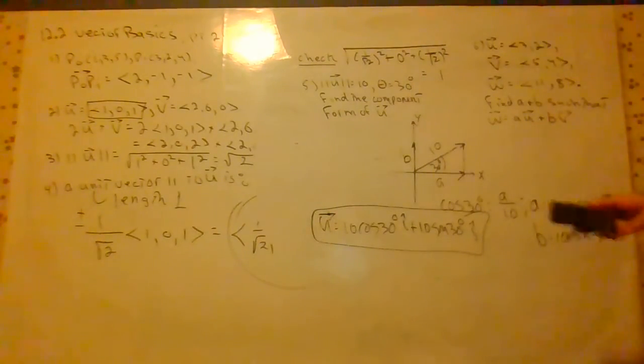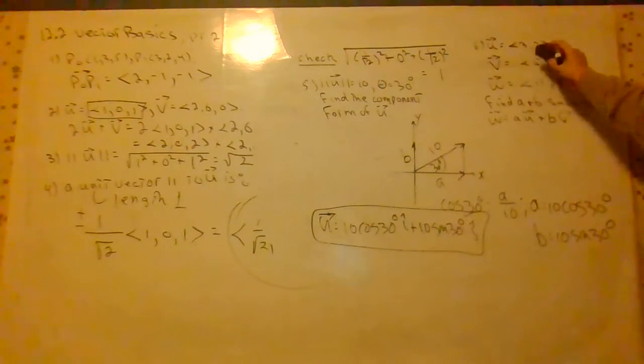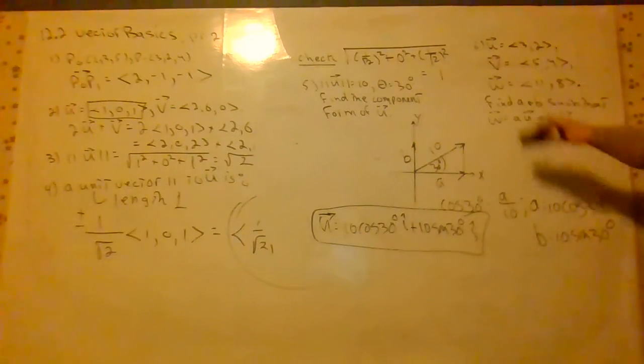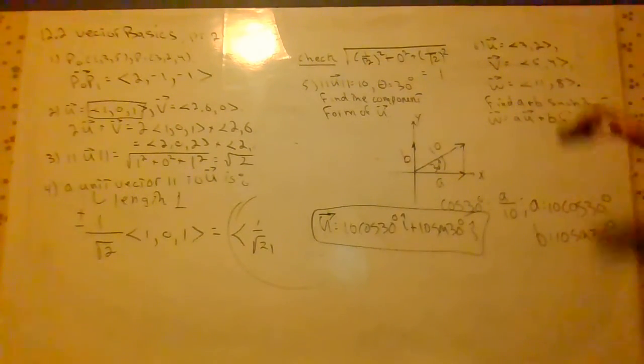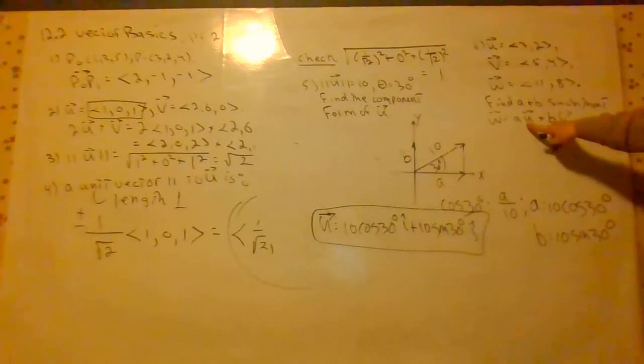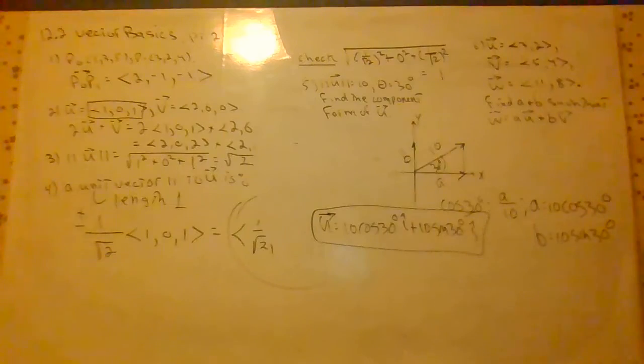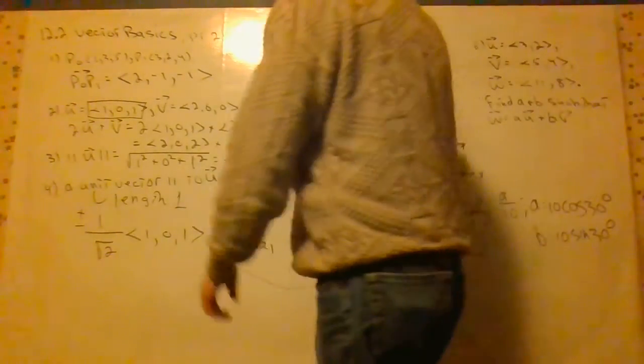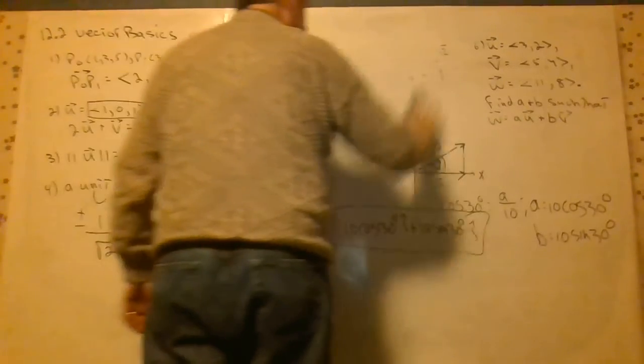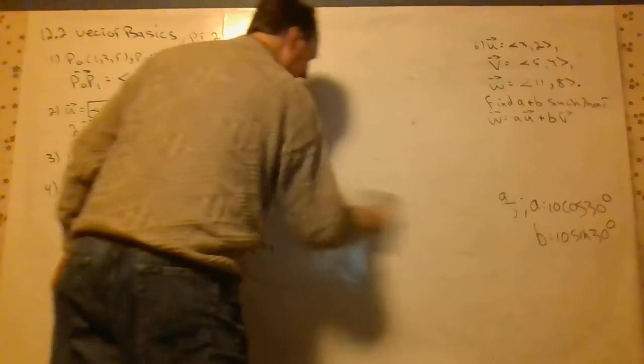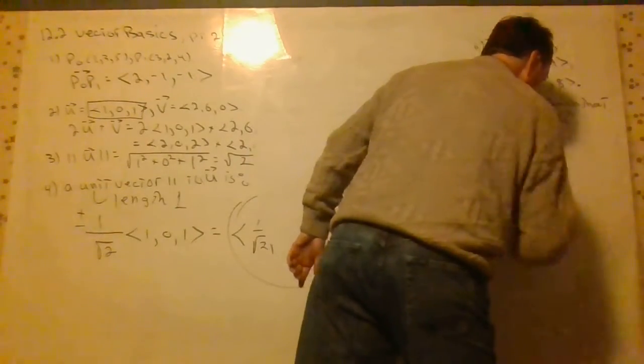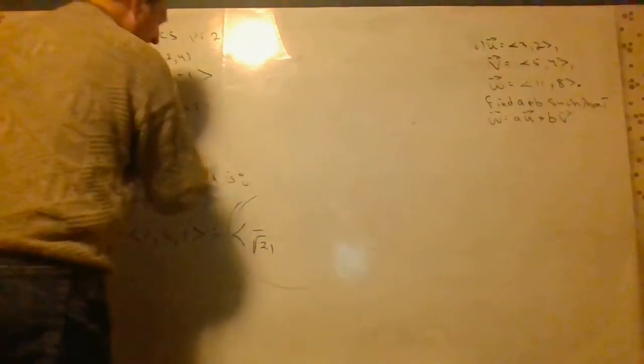We have one more problem to go through. You can watch this video as many times as you want. This covers a lot of the homework questions. u is equal to (3, 2), v is equal to (5, 4), w is equal to (11, 8). We want to find scalars a and b such that w is equal to au plus bv. This is what's called a linear combination of these two vectors. We want to see if we can express w as a linear combination of u and v. It's a pretty big question in linear algebra. Let me clear some space here so we're not some cramped.